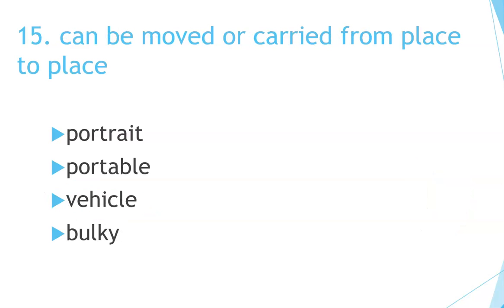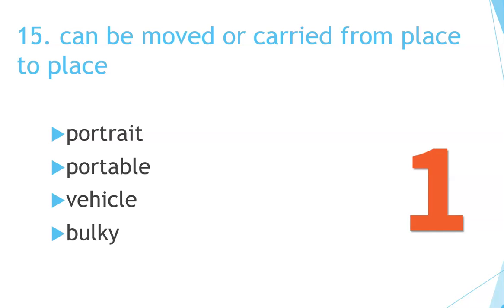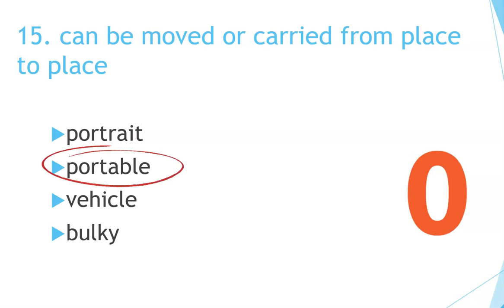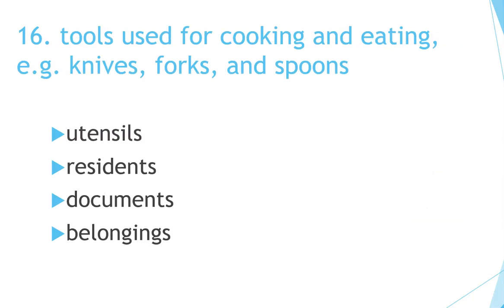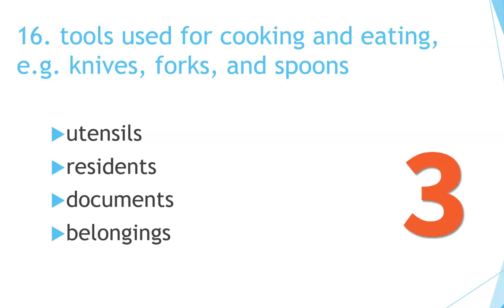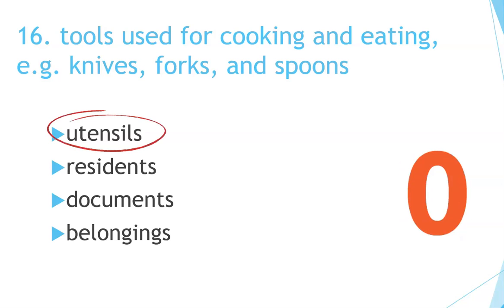Number 15. Can be moved or carried from place to place. Portable. Number 16. Tools used for cooking and eating — for example, knives, forks, and spoons. Utensils.